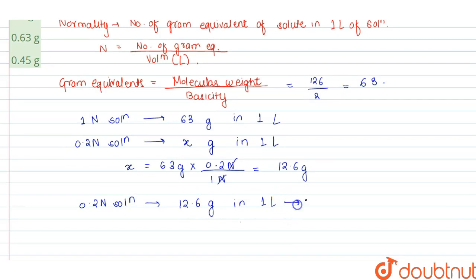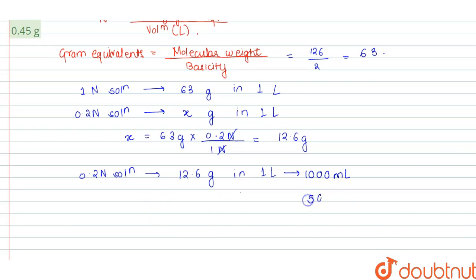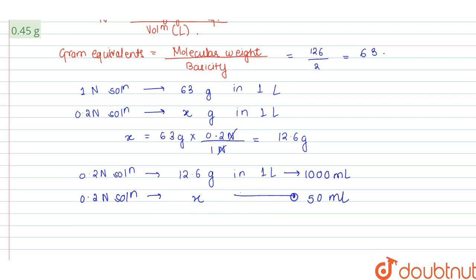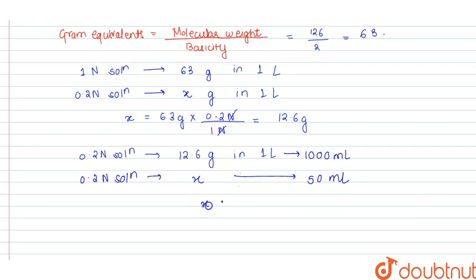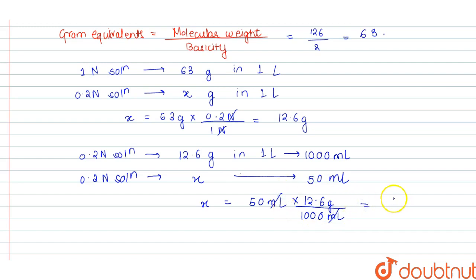One liter means 1000 ml, so we have 12.6 grams in 1000 ml, but we have to prepare only a 50 ml solution. Let the required mass be x. By simple cross multiplication, x is equal to 50 ml multiplied by 12.6 grams upon 1000 ml. The ml units cancel and the value of x is 0.63 gram.